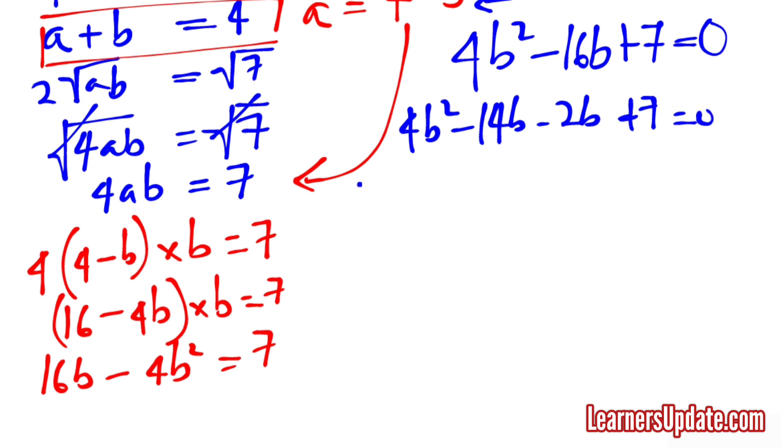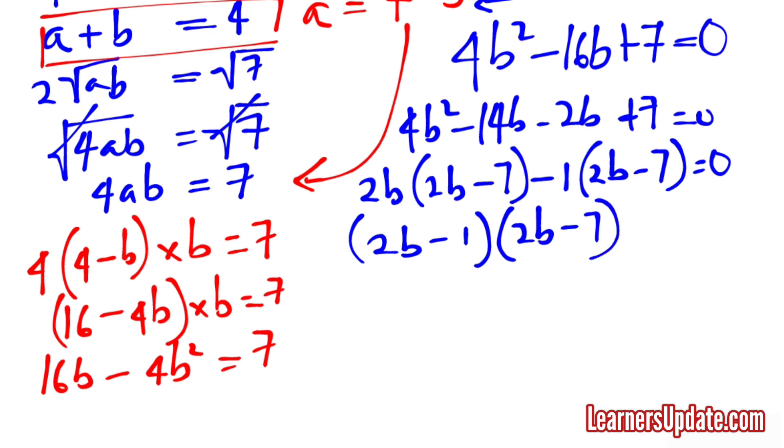So that I can say 2B into 2B minus 7 minus 1 into 2B minus 7 is equal to 0. From here I see that (2B minus 1) into (2B minus 7) is equal to 0.